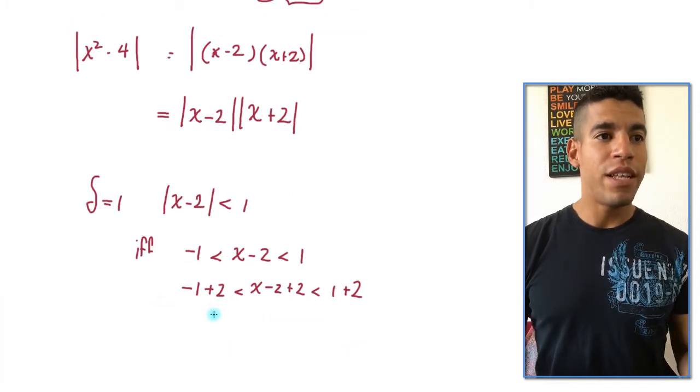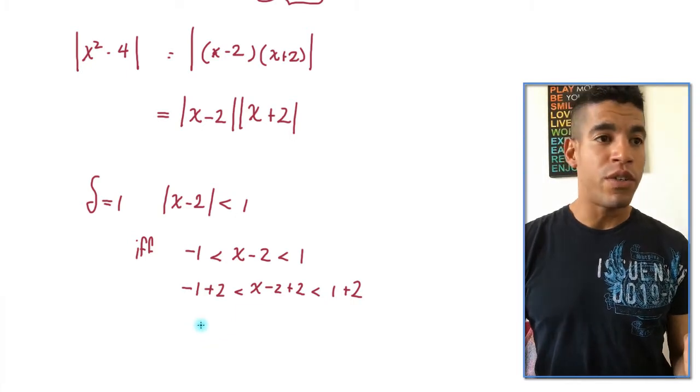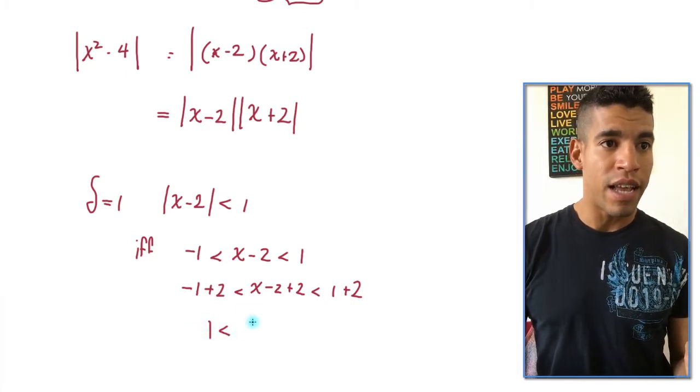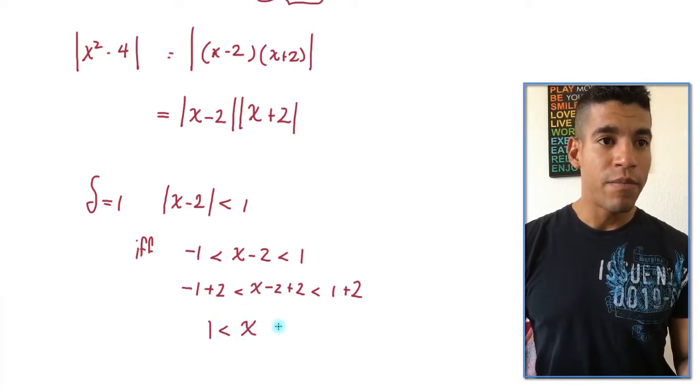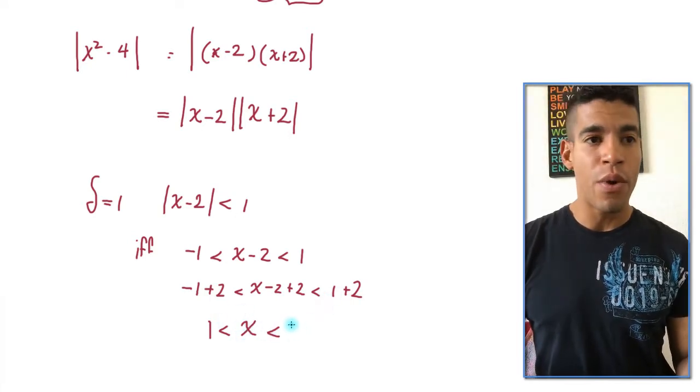So minus 1 plus 2 less than x minus 2 plus 2 less than 1 plus 2. Now, once I do that, I have negative 1 plus 2, which is 1. So 1 less than negative 2 plus 2 is 0. That's why we added 2 in the first place. And then 1 plus 2 is 3.